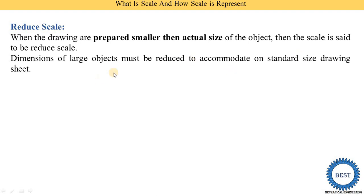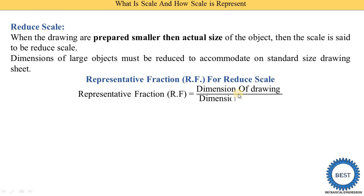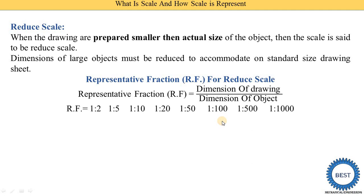Dimensions of large objects must be reduced to accommodate the standard size of drawing sheets. The representative fraction for a reduced scale uses the same definition: dimension of drawing divided by dimension of object. Here we are reducing the size of the object in a drawing. For example, if the height of a building is 20 meters and we represent it as 1 meter in the drawing, the ratio is 1 divided by 20, written as 1:20. Various representative fraction ratios are possible.